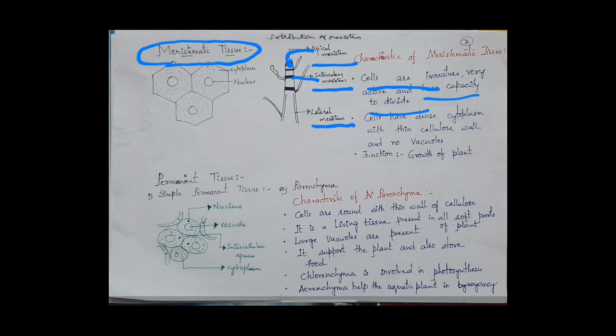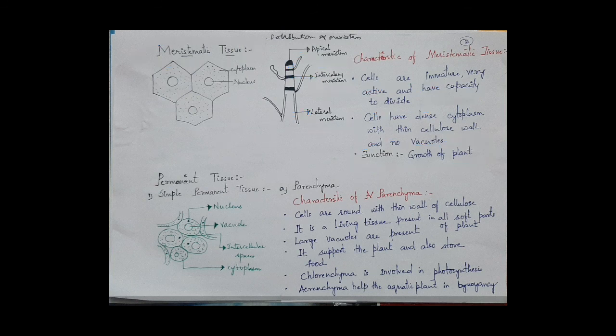Lateral meristem is present laterally, which increases the thickness of the root and shoot. Overall, meristematic tissue helps in the growth of the plant. Now coming to the permanent tissue — the first is simple permanent tissue.